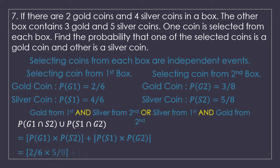I am not going to simplify immediately because I need to take the LCM afterwards anyway. Adding them gives 22 upon 48, which simplifies to 11 upon 24. So the probability that one of the selected coins is a gold coin and the other is a silver coin is 11 upon 24.